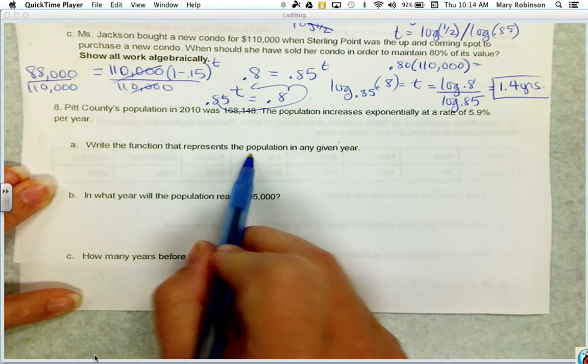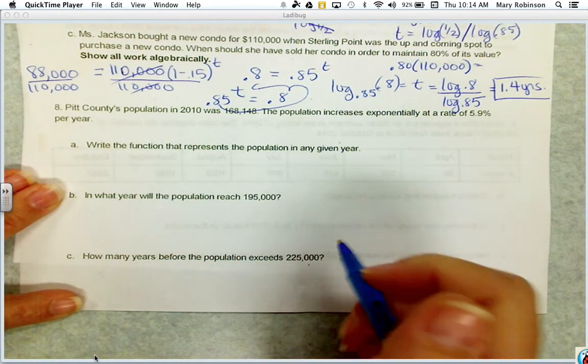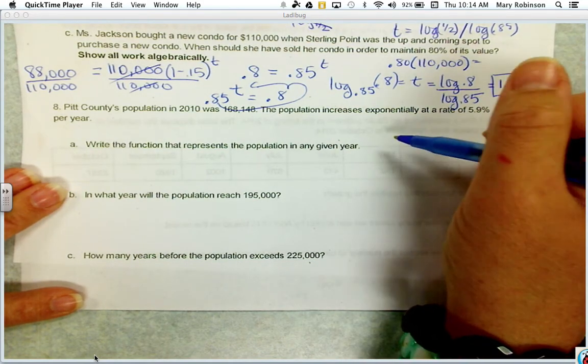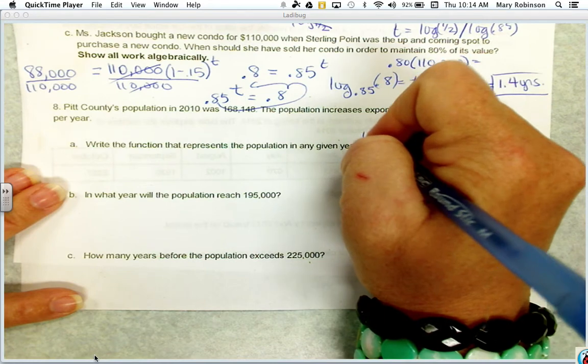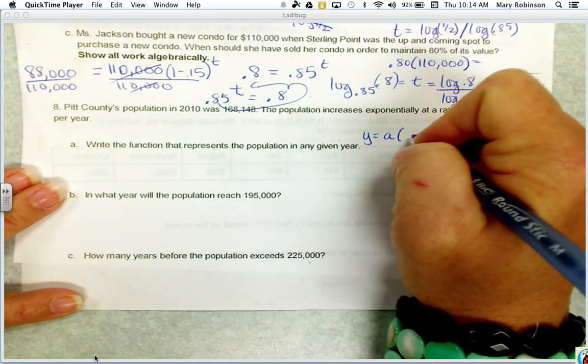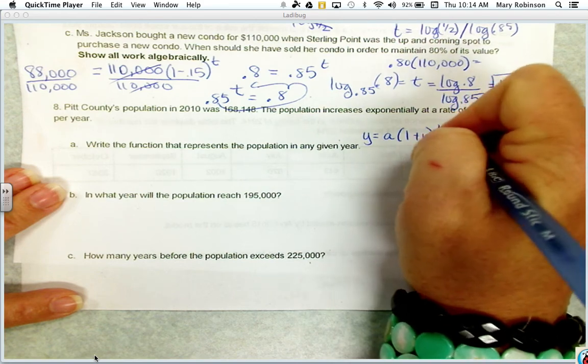Write the function that represents the population in any given year. So we are dealing with population growth. So we want to be thinking about - and again, we're given a percentage - the formula A times 1 plus R to the t power.